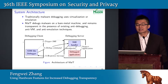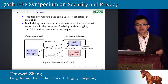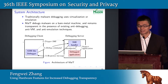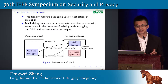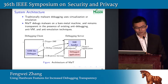As mentioned, traditional malware debugging uses virtualization or emulation technologies. Nowadays malware has become more and more sophisticated — if it finds itself running inside a virtual machine, it will quit or suspend its malicious behavior, so traditional approaches will not be able to analyze it. MAUT debugs malware on a bare metal machine and can remain transparent in the presence of existing anti-debugging, anti-VM, and anti-emulation techniques. The figure below shows the architecture of the MAUT system.